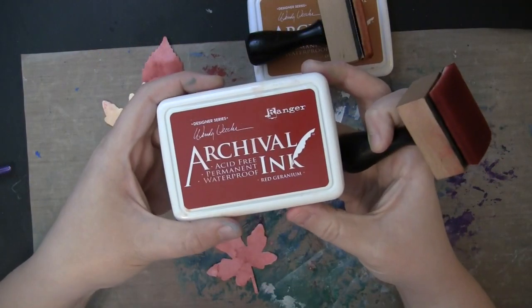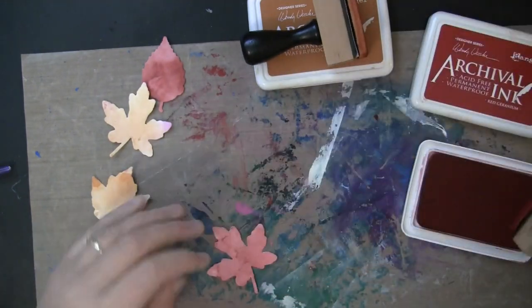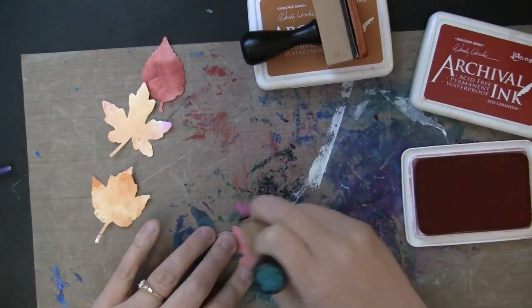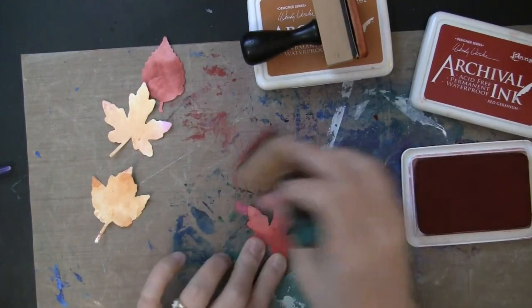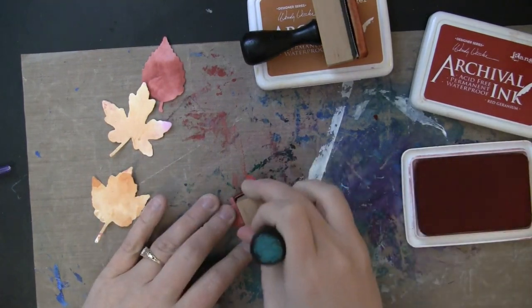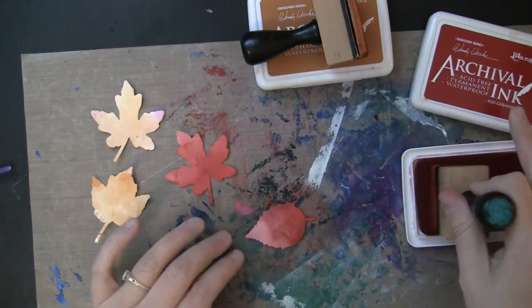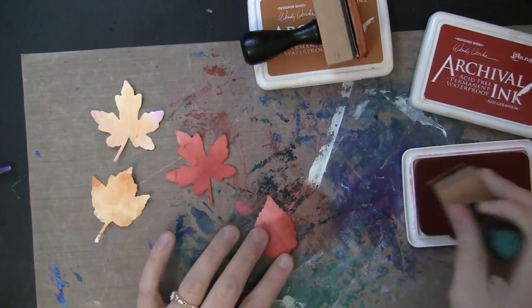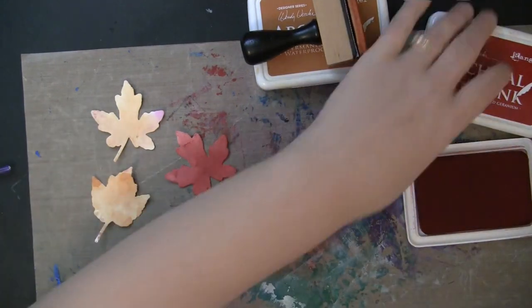So I did several leaves, and I decided I wanted to darken up the red and the yellow, so I'm using Archival Ink with the Ink Blending Tool and a Foam Pad to ink up those leaves. This is the color of Red Geranium, and then on the yellow, I will be adding the Orange Blossom.